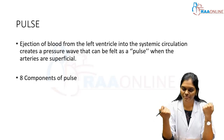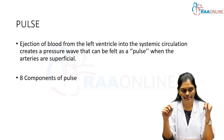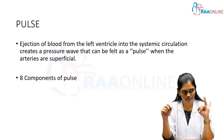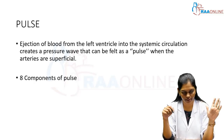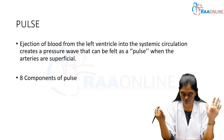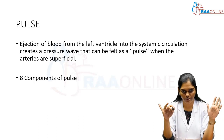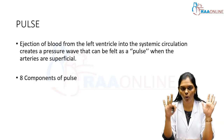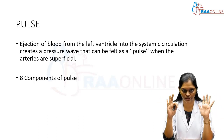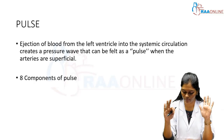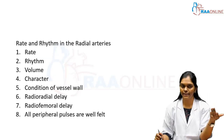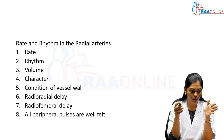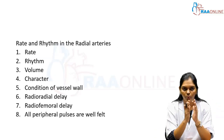What are the components of pulse? There are eight components: number one is rate, number two rhythm, then character, volume, radio-radial delay, radio-femoral delay, condition of the vessel walls, and all peripheral pulses to be felt. These are the eight components of pulse.